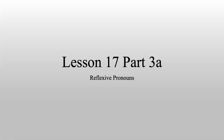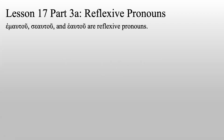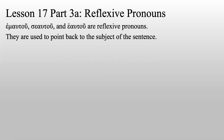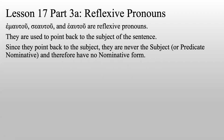Lesson 17, Part 3a: Reflexive Pronouns. Emautu, seau tu, and heau tu are reflexive pronouns. They are used to point back to the subject of the sentence. Since they point back to the subject, they are never the subject or predicate nominative and therefore have no nominative form, which is why they were introduced in the genitive, because the genitive is the first form that we have.